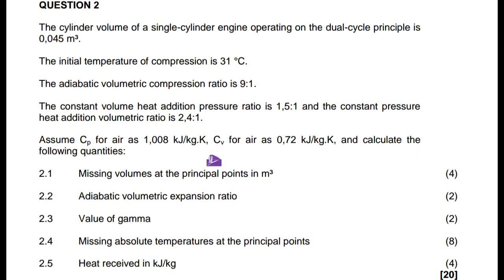The cylinder volume of a single cylinder engine operating on the dual cycle principle is 0.045 cubic meters. The initial temperature of compression is 31 degrees Celsius. The adiabatic volumetric compression ratio is 9.1. The constant volume heat addition pressure ratio is 1.5 to 1, and the constant pressure heat addition volumetric ratio is 2.4 to 1. Assume the specific heat capacity at constant pressure for air as 1.008 kJ per kg kelvin, and the specific heat capacity at constant volume for air as 0.72 kJ per kg kelvin. Calculate the following quantities.